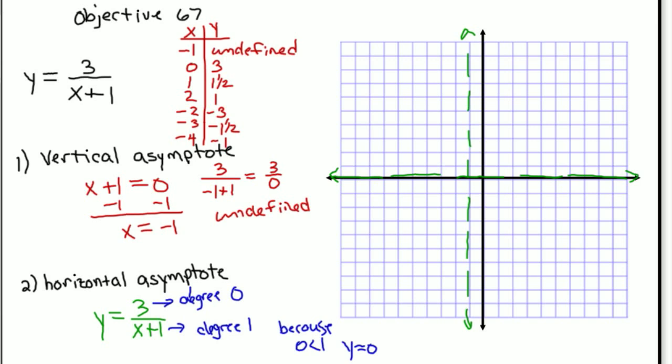So I can go ahead and plot these points on my graph. So here's 0, 3. 1, 1 and a half. 2, 1. Negative 2, negative 3. Negative 3, negative 1 and a half. Negative 4, negative 1.